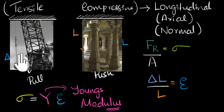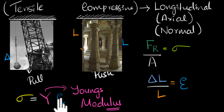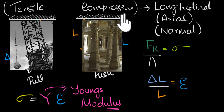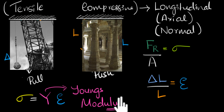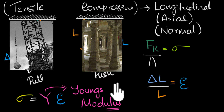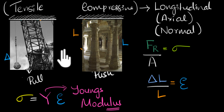In general, the Young's modulus for tensile and compression need not be the same. A material could be more elastic in tension but less elastic in compression, so you might have two different values of Young's modulus. However, in any problem, if they don't mention two different values and just give you one Young's modulus, you can use that number for either tensile or compressive stress.